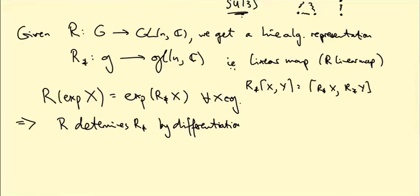And actually, R* determines R under certain conditions. It kind of looks like it determines R, right? Because it's telling you R(exp(x)) is determined by R*. So certainly R* determines R(g) for all g in the image of the exponential map. So then the question is, well, does that determine R(g) for all g in G?